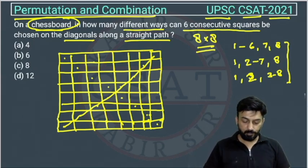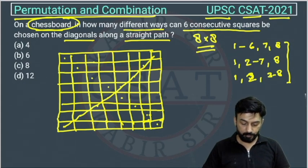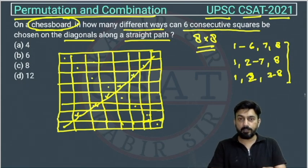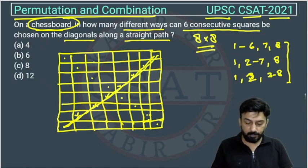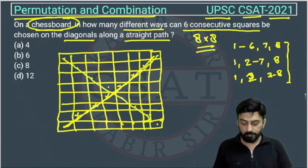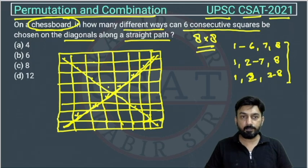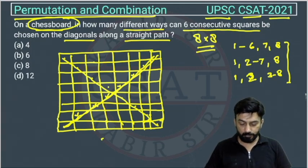First, we have to choose squares consecutively, right? If we are choosing this square, then we will choose this also, this also, right? This we have to choose. So there are only 3 possibilities along this diagonal. Right, similarly along this diagonal we have 3 possibilities. So the total possibility will be 3 plus 3 is equal to 6. Right, so the answer will be option B.